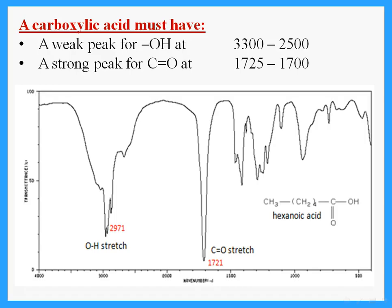The OH gives a peak in that area. If this is an acid, in addition to the OH it also has a C=O. The C=O will always give a strong peak at around 1700 to 1720. That strong peak at 1721 indicates a C=O. So a compound that has both a C=O and an OH indicates that it must be a carboxylic acid.